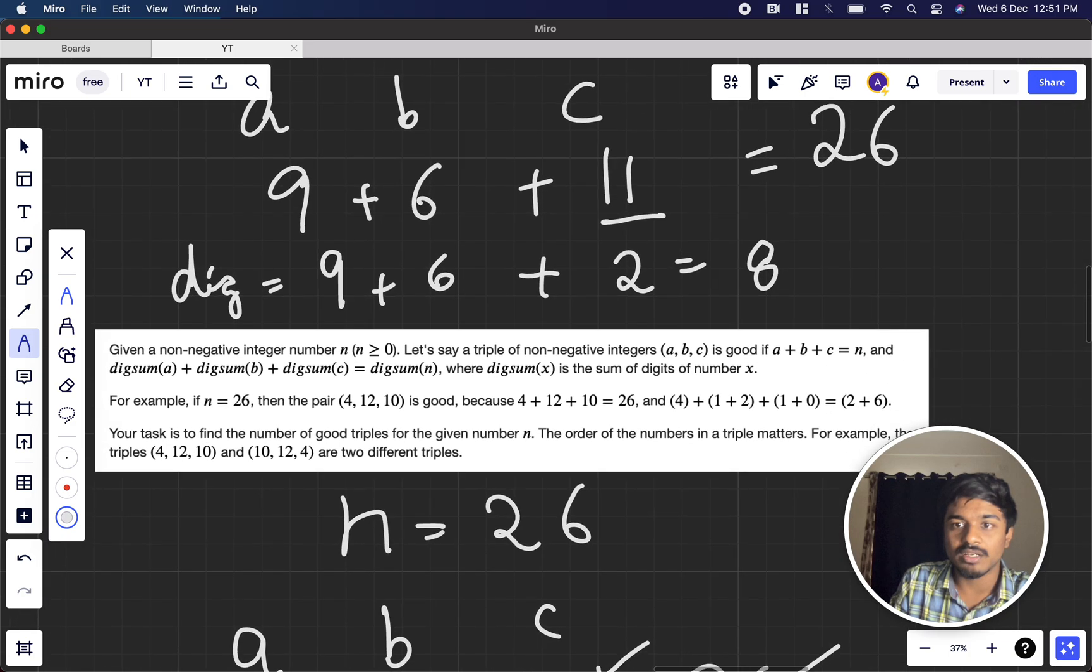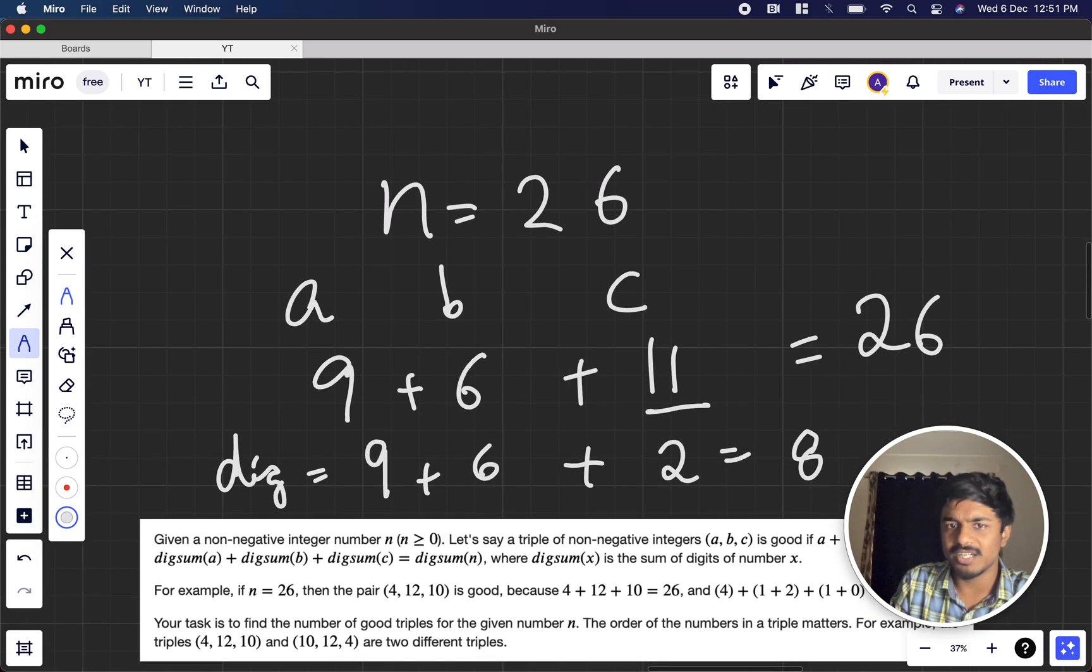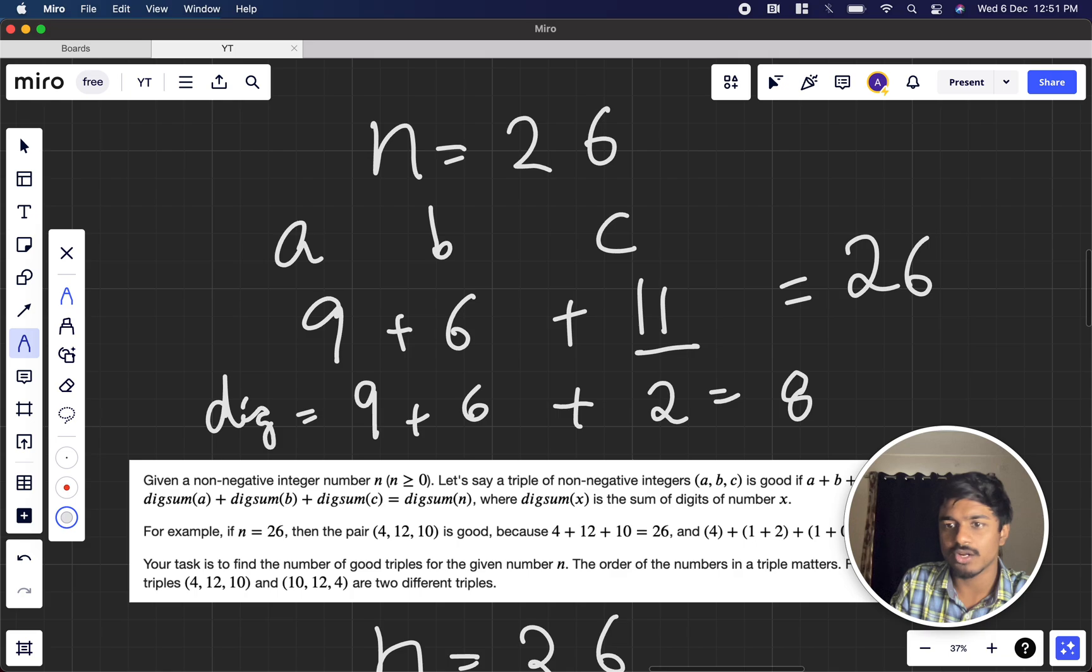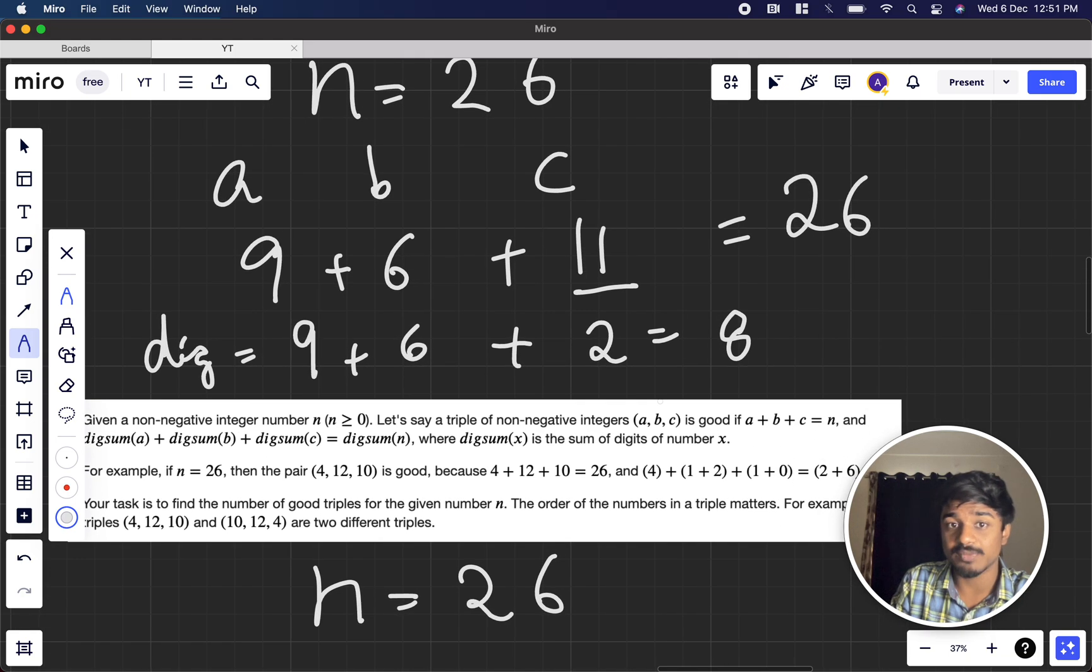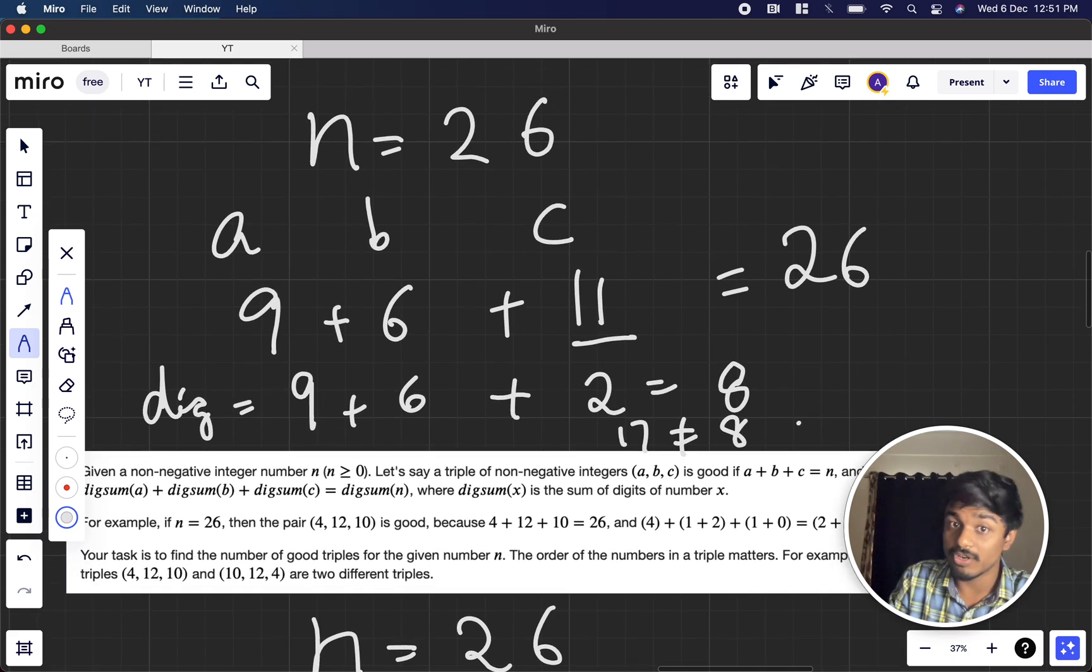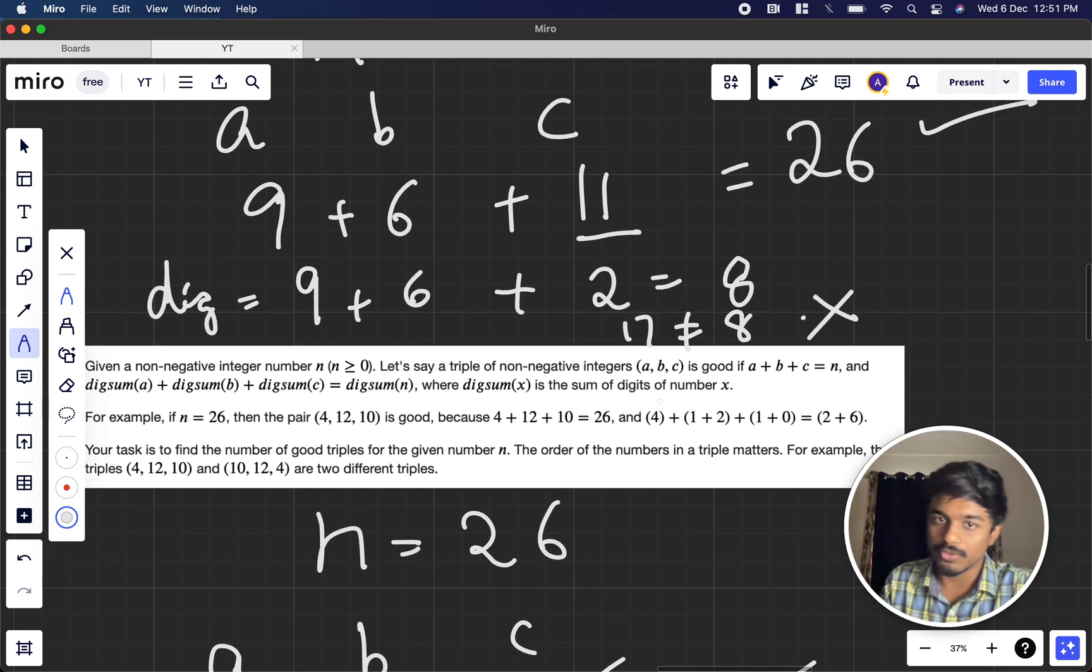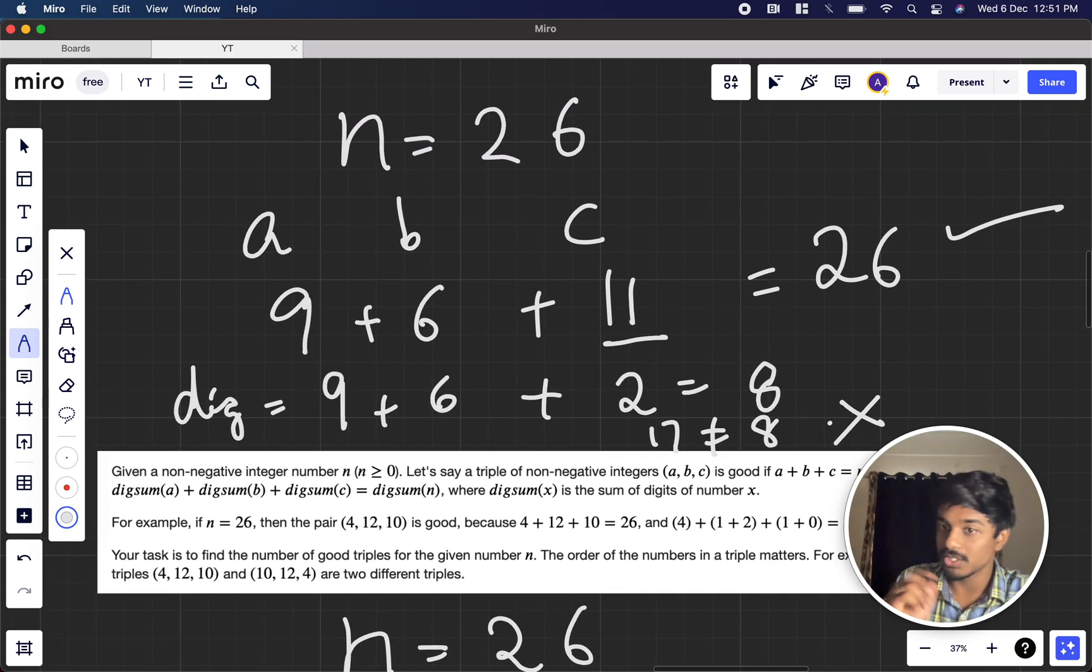Now they told that this is 26, but for 26 this is one other combination. Here as you see, 9 plus 6 plus 2 - that's 8 plus 9, which is 17, and 17 is definitely not equal to 8. So for 9 plus 6 plus 11 it is 26, but if you reduce it to digit sum it's not working. So for 26 this is one possible case, and this is not a possible case.